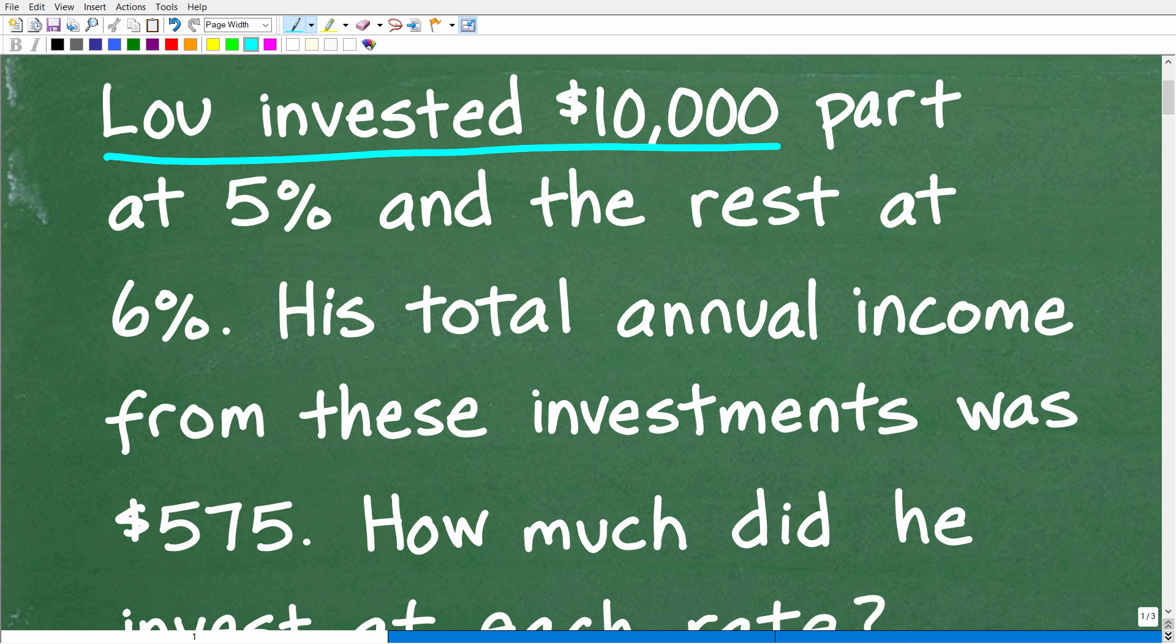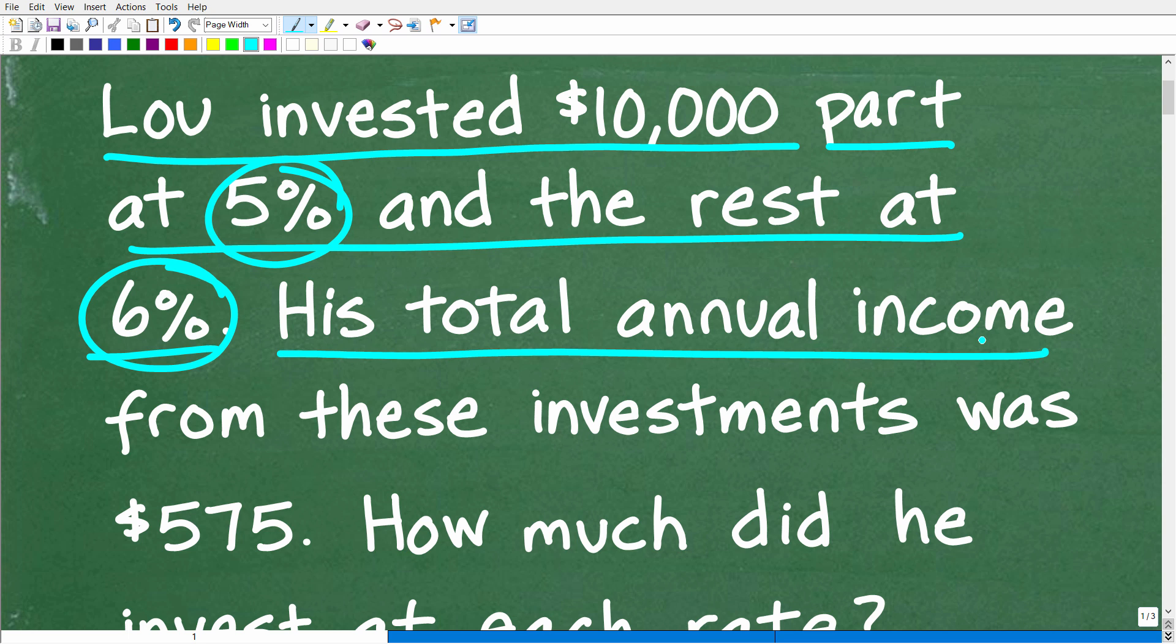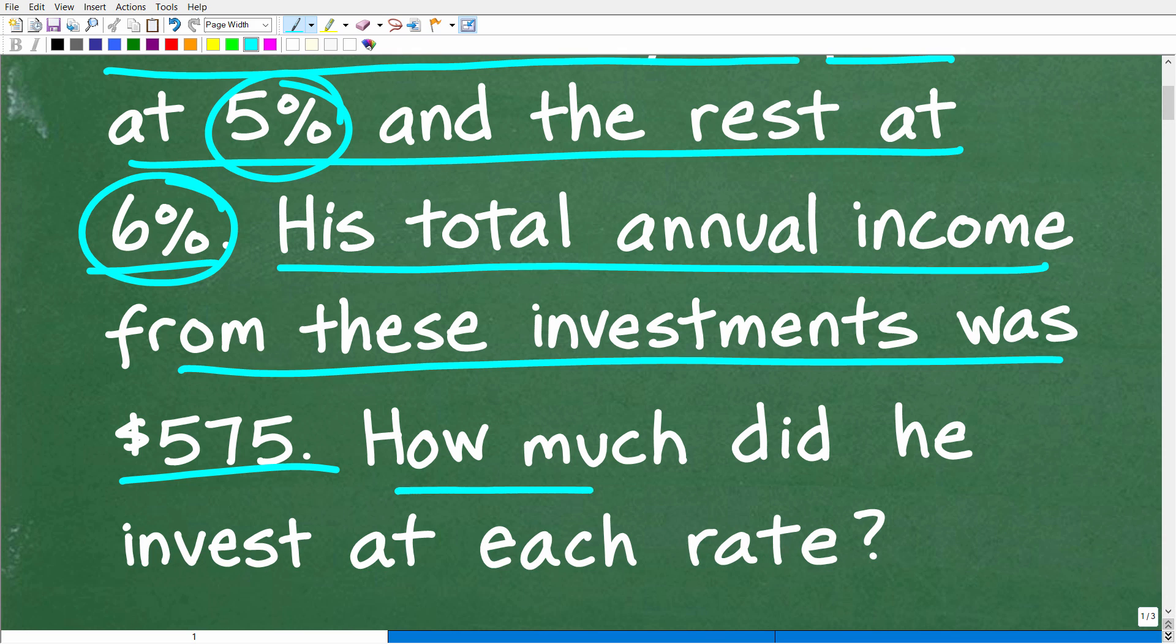Lou invested $10,000, part at 5% and the rest at 6%. And what we're talking about here is simple interest, no compounding. His total annual income from these investments was $575. How much did he invest at each rate?